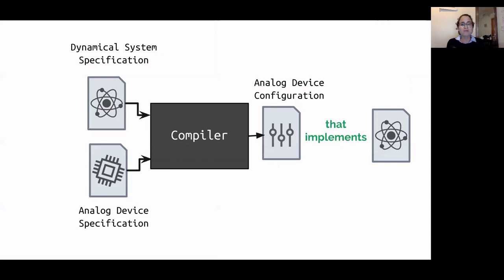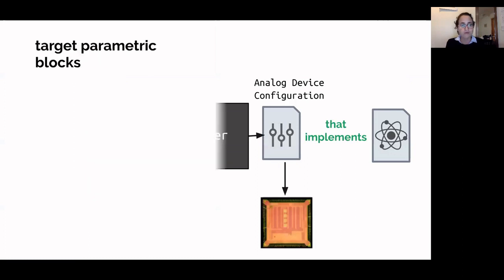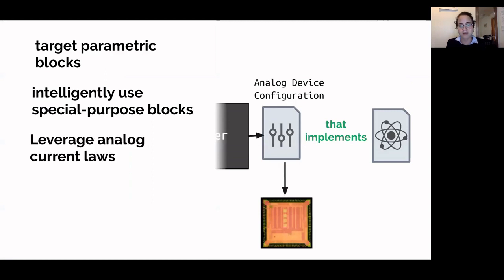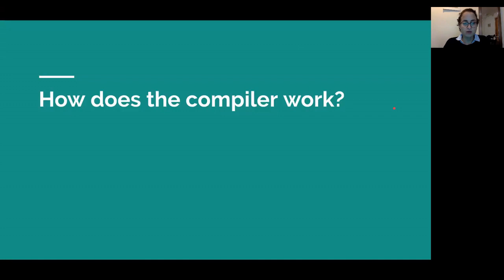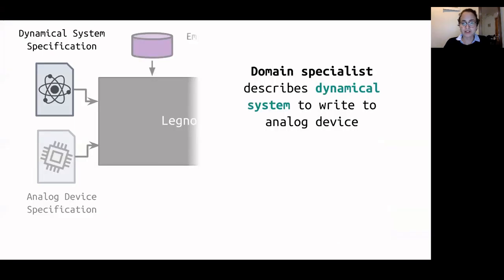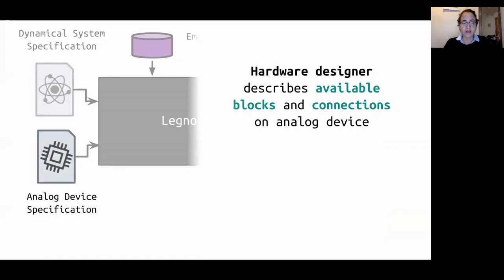So if we revisit the compiler, in order for it to faithfully target this hardware, we need it to target parametric blocks effectively, intelligently use special-purpose blocks when needed, leverage the analog current laws to perform additional computation, and handle all the analog behaviors we just talked about. The compiler takes as input a dynamical system specification written by the domain specialist, and an analog device specification provided by the hardware designer describing the available blocks, connections, and behavioral specification including all parametric behavior for each block.